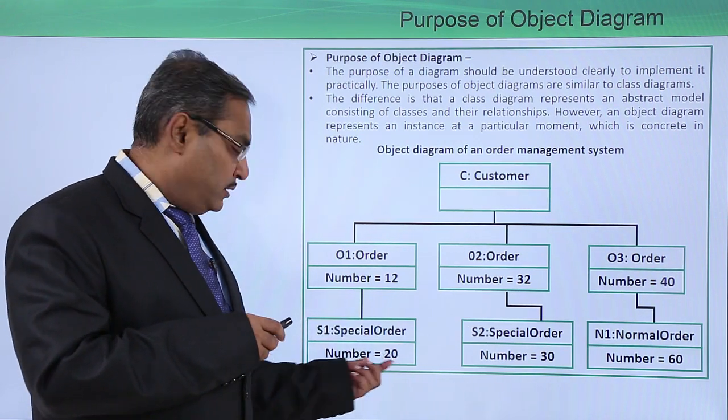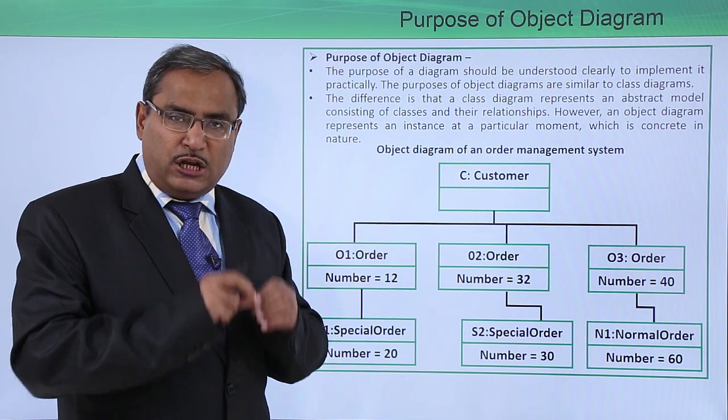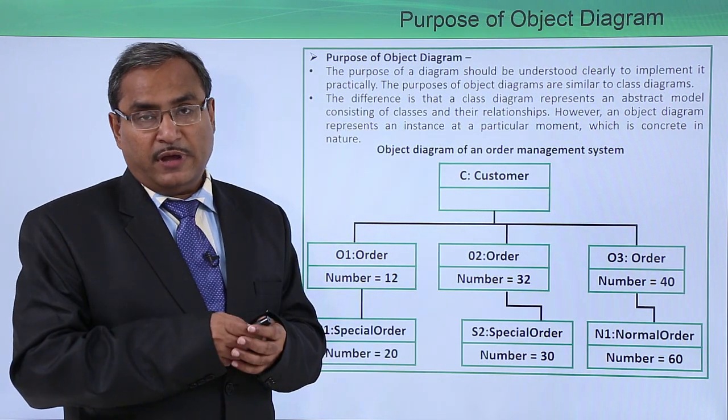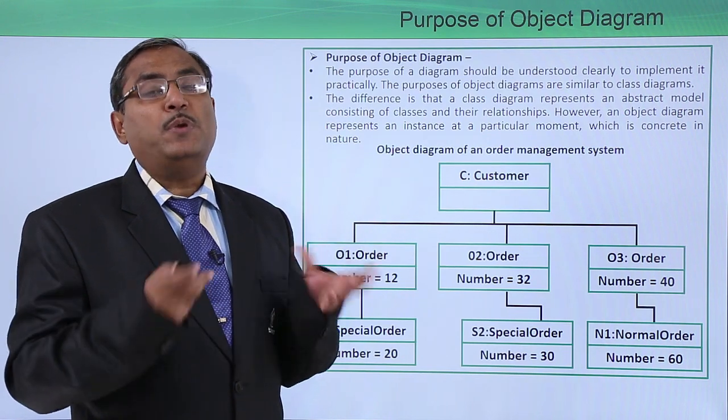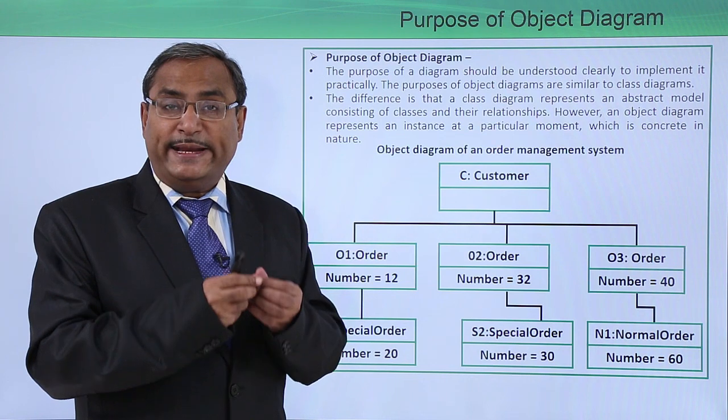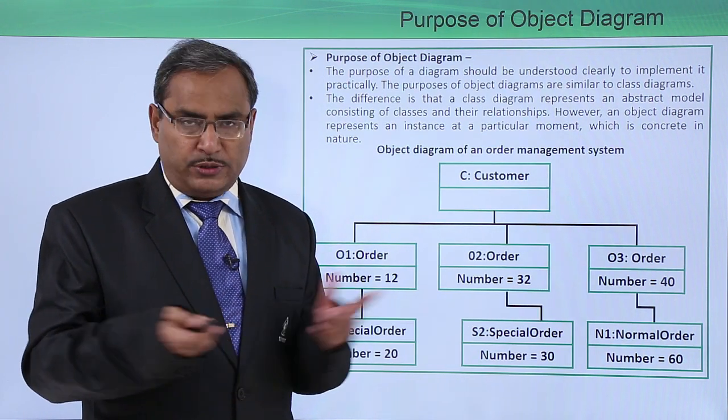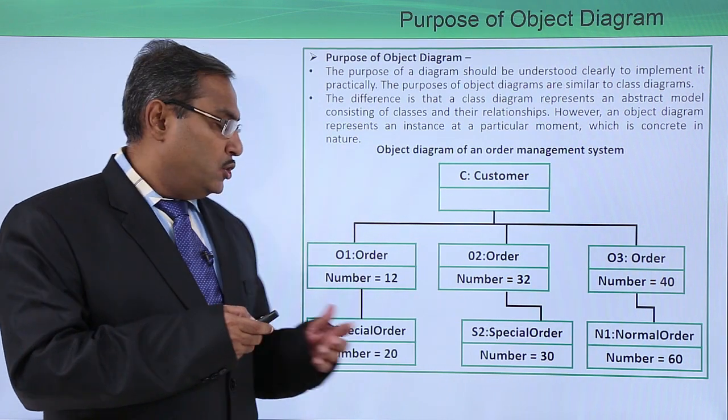What is instantiation? Until and unless we reserve some memory space against the attribute number, we cannot keep any value on them. Depending upon the language in which we are going to implement, how many bytes will be required to store one integer? Let it be four bytes, which is common in most object-oriented programming languages.